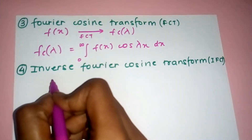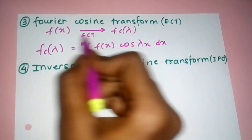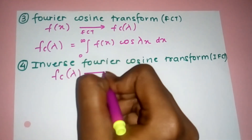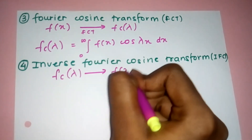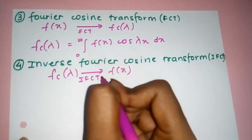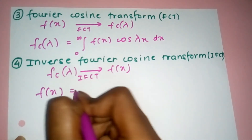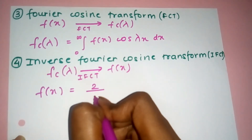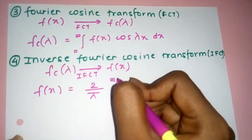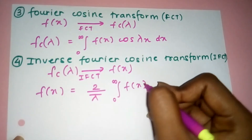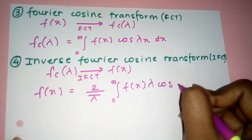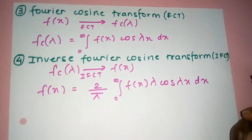For the Inverse Fourier Cosine Transform, we have F_c(λ) and need to convert it back to f(x). The formula for f(x) is: f(x) = (2/π) · integral from 0 to infinity of F_c(λ) cos(λx) dλ.